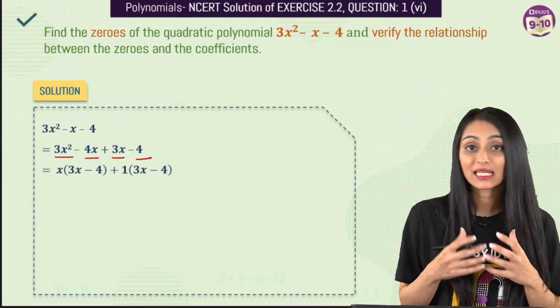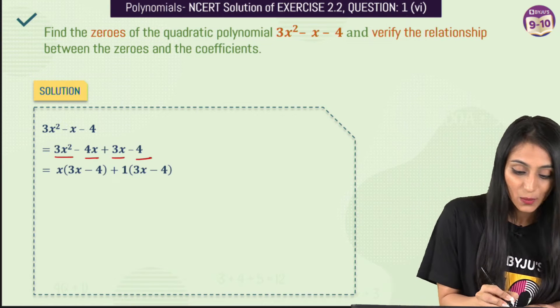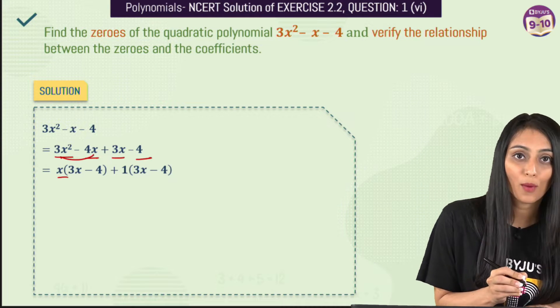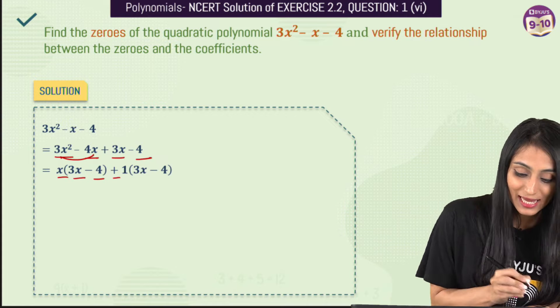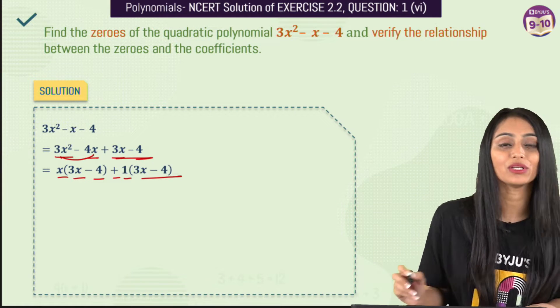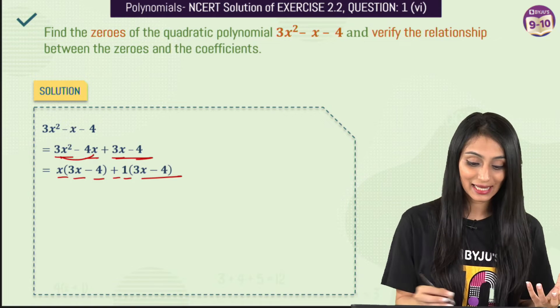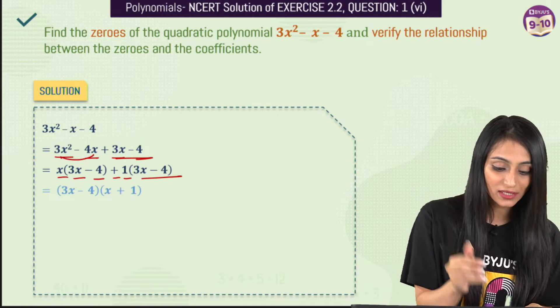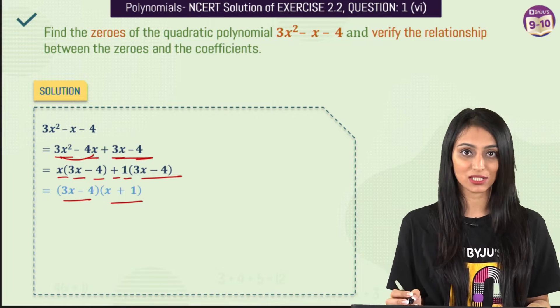Now we will be taking common from the consecutive terms which could be x if I take common from here that's going to be 3x - 4 plus sign as it is. From here nothing is common so we take one outside and we have 3x - 4. Now both the brackets are same that means the two factors would be 3x - 4 and x + 1.